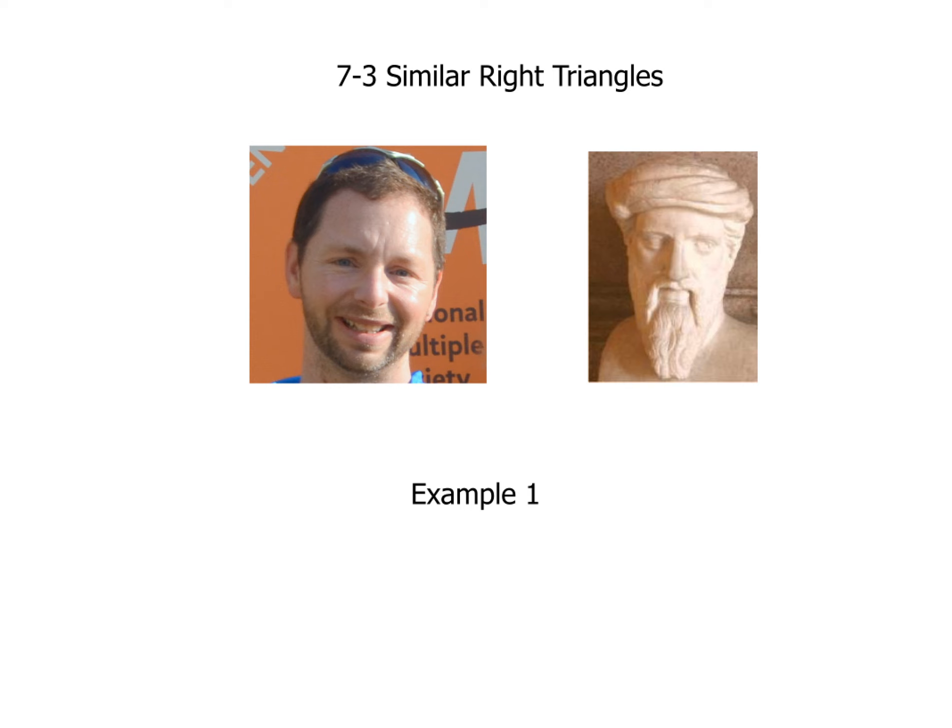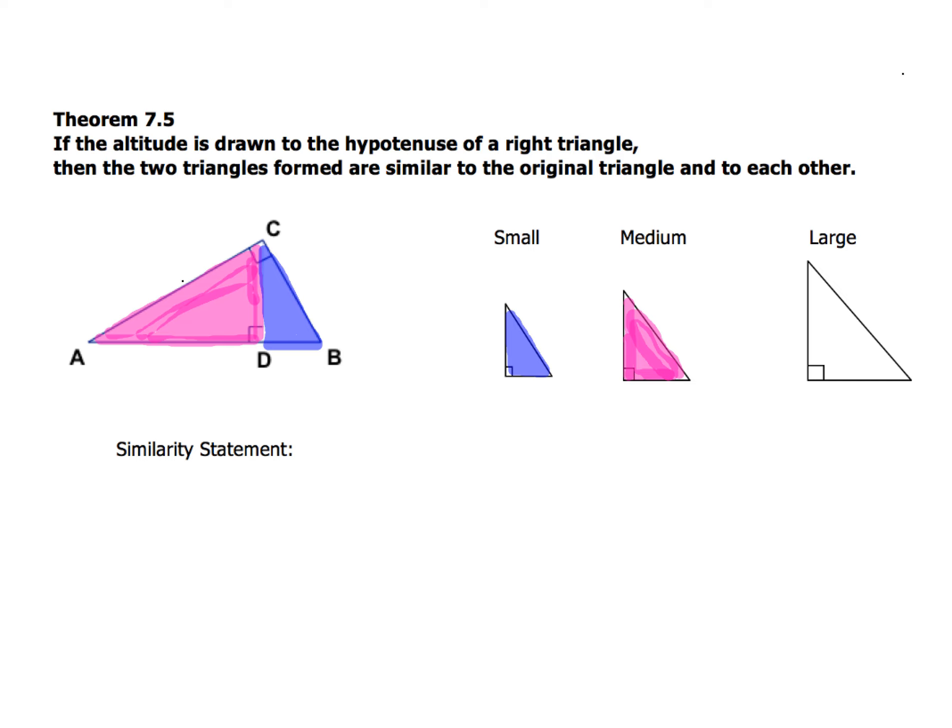That's right. So now we're going to take a look at one of our theorems here which is really going to help us understand a little bit. Theorem 7.5 in our textbook, yours might be a little bit different. It says if the altitude is drawn to the hypotenuse of a right triangle, then the two triangles formed are similar to the original triangle and to each other.